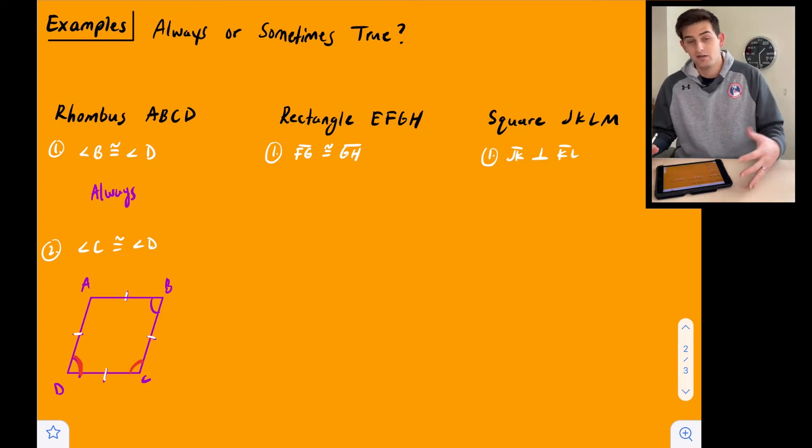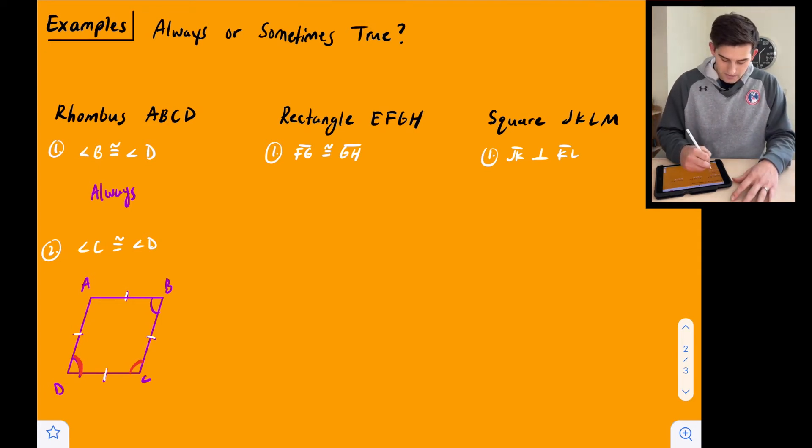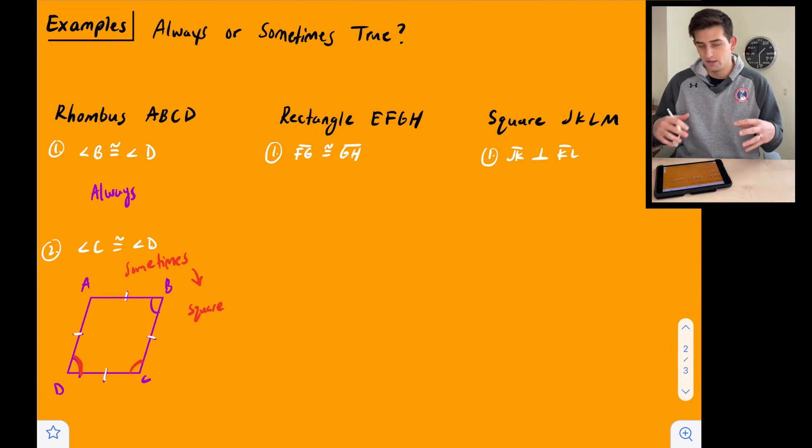However, remember a square could be a rhombus, right? Or a square is a rhombus. So for this one, we're going to say sometimes. Okay. And the sometimes would be if this rhombus is a square. So if it is a rhombus has four congruent sides, but also it has four right angles, then yes, angle C and angle D would be congruent because they would both be 90 degree angles.